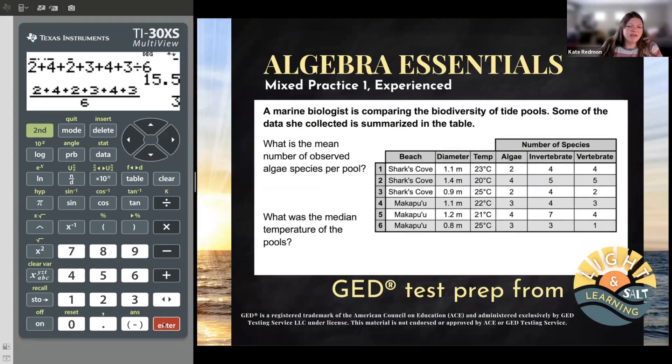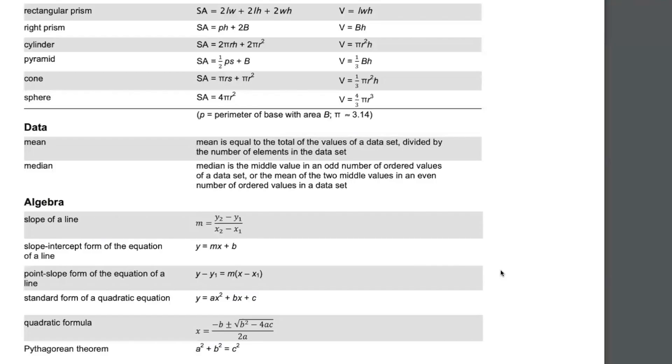Next example says, what was the median temperature of the pools? So median temperature. So again, we have the pools. This time we're looking at temp. And this time we want to find median. Let's go check out what the formula sheet has to say about that. According to this sheet, median is the middle value in an odd number of ordered values in the data set. So ordered values, they're telling you to put the numbers in order, put the data set in order. And then it says that the median is the middle number.